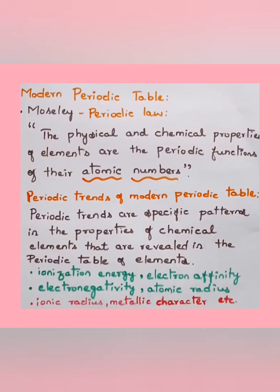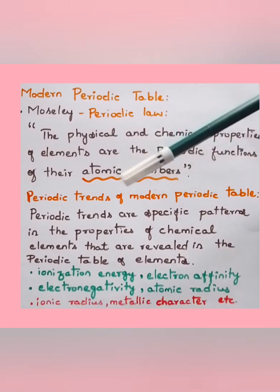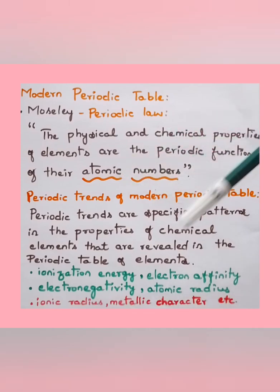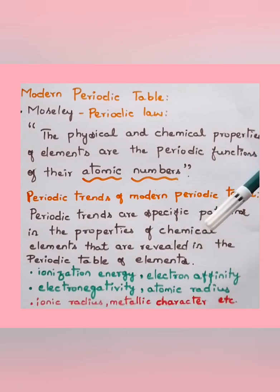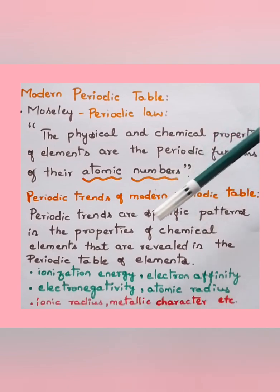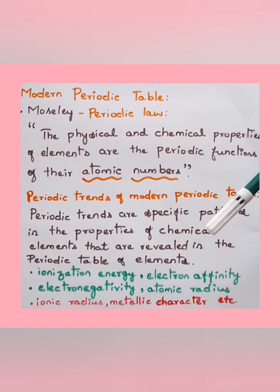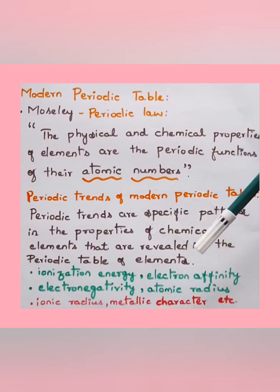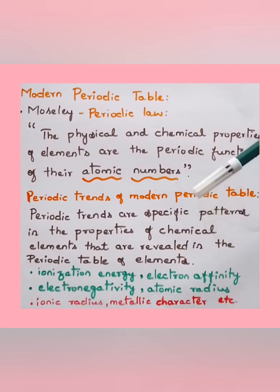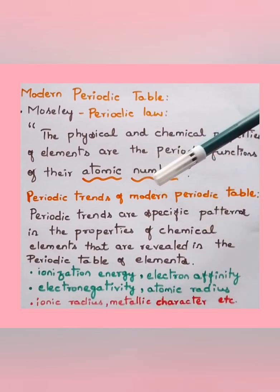We shall now move to periodic trends of the modern periodic table. Periodic trends are specific patterns in the properties of chemical elements revealed in the periodic table. For example, how ionization energy, electron affinity, electronegativity, atomic radius, ionic radius, and metallic character change across the periodic table.